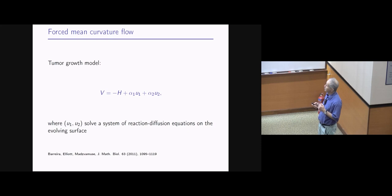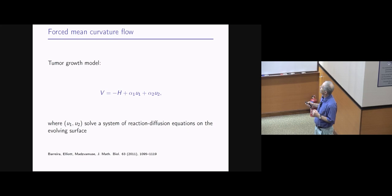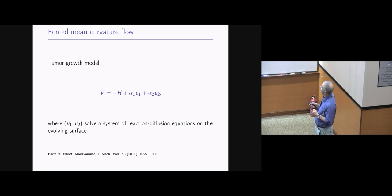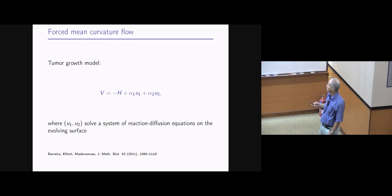Much of my talk is about mean curvature flow, but the techniques apply to a variety of geometric flows. One is forced mean curvature flow — an example is the tumor growth model from the video — where the normal velocity is negative mean curvature plus extra forcing terms involving coefficients times U1 and U2, which solve a system of reaction-diffusion equations on the evolving surface. The motion of the surface is coupled to reaction-diffusion on the surface itself.